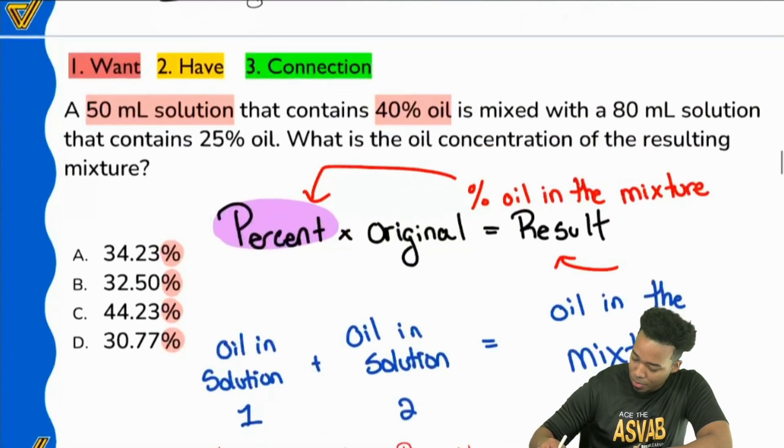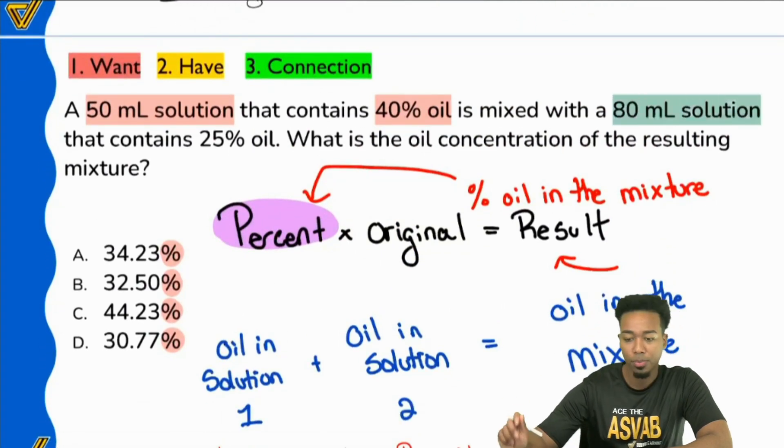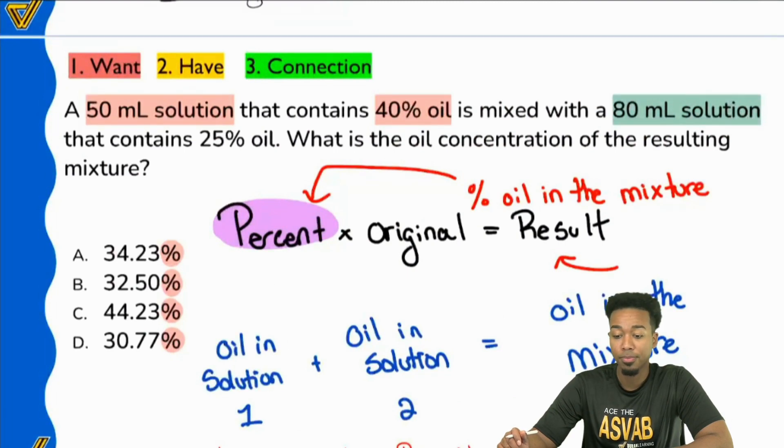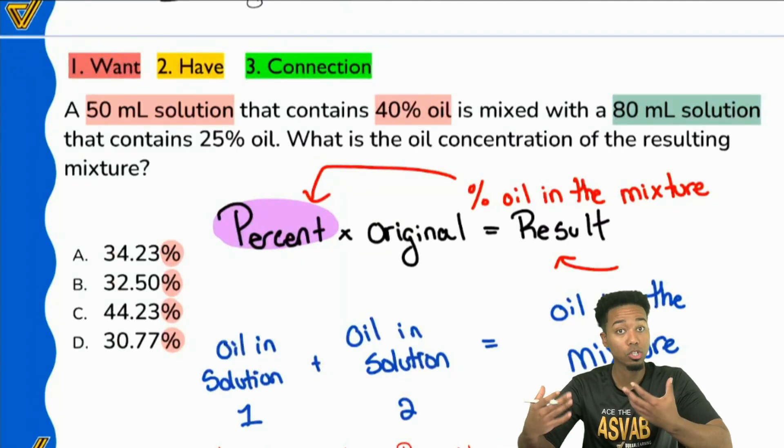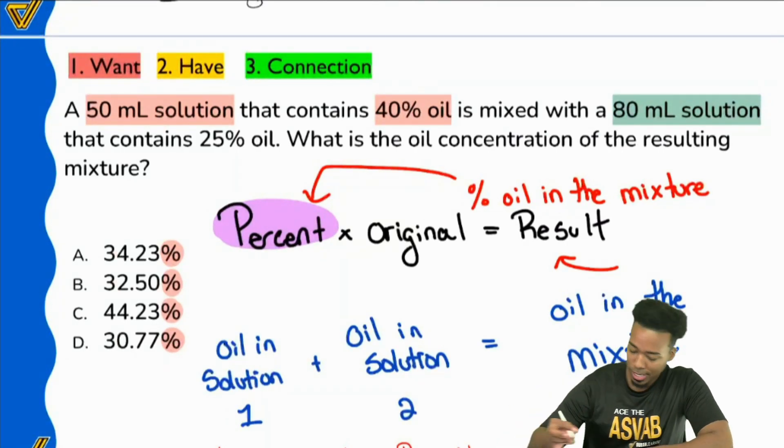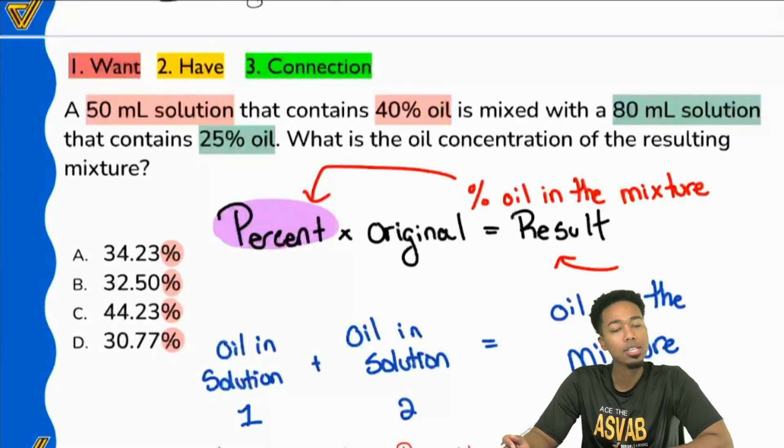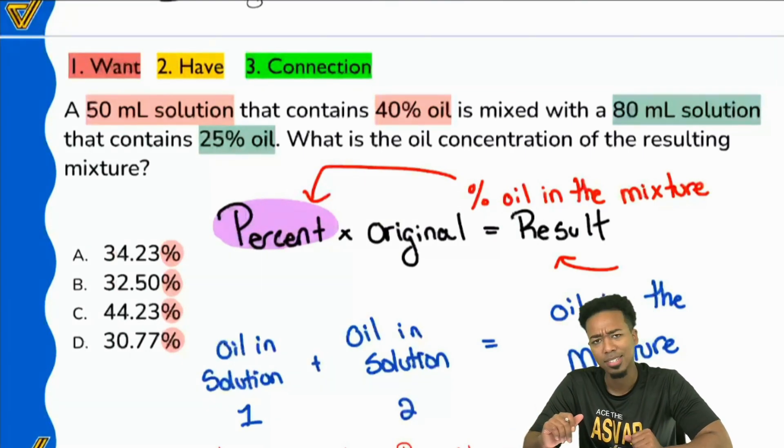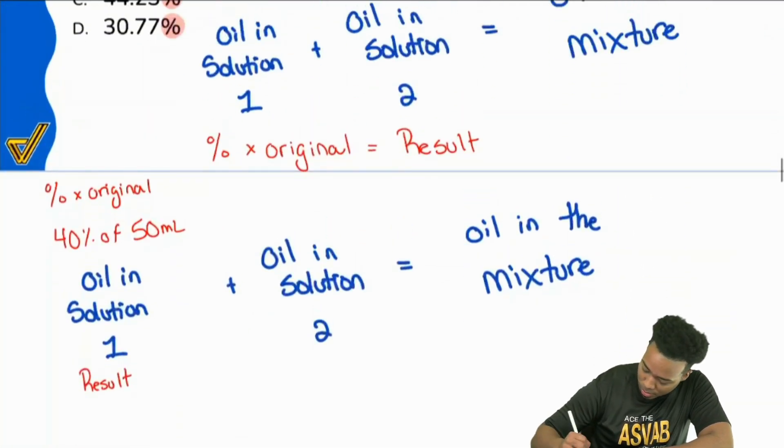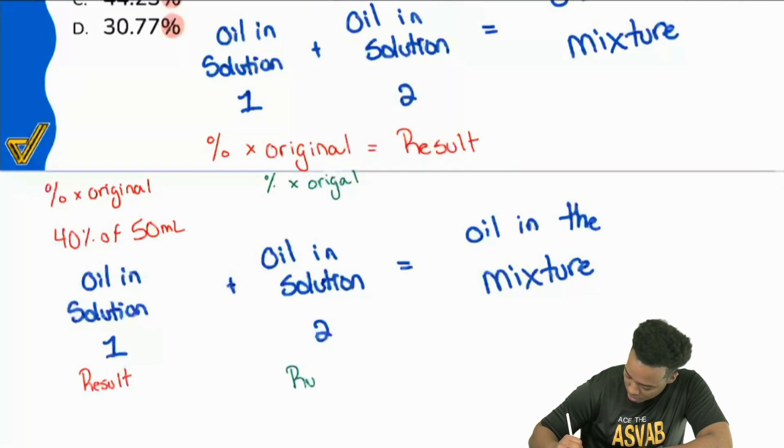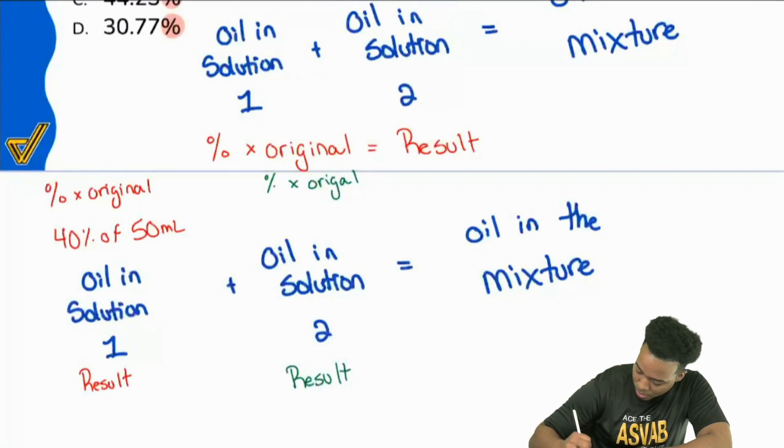Oil in solution two. What do we have for the original amount for solution two? Great. That's going to be 80. We're told that the original amount of solution two is 80 milliliters. And then what is the percent in solution two? Right. That's going to be 25 percent. So let's go ahead and now copy that down here. The percent times the original is going to give us the result right here. But this result is going to be 25 percent of 80 milliliters.